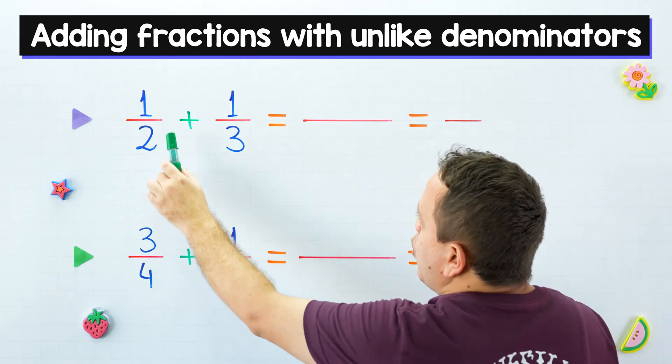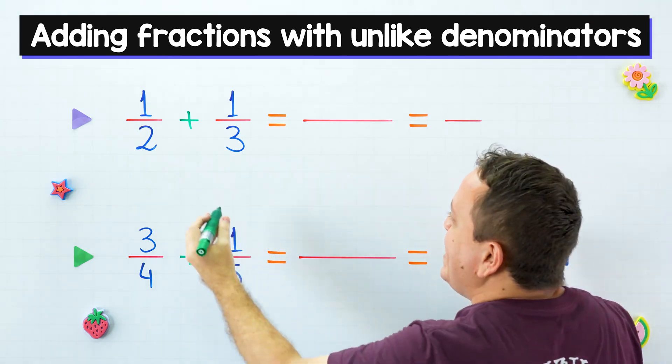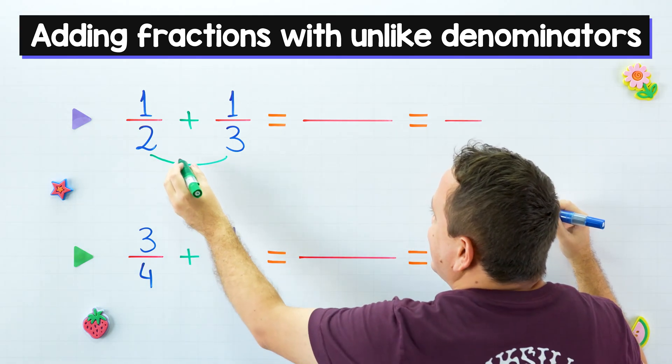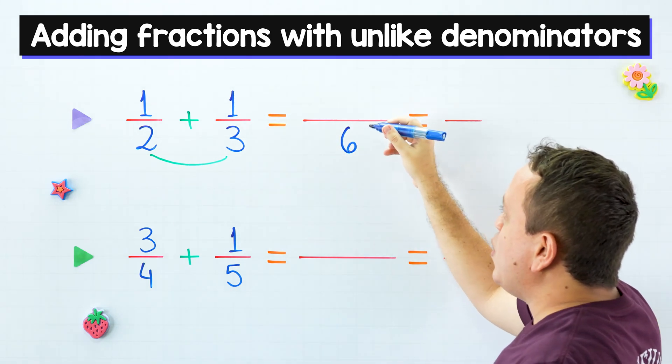In the first example, we have to add one half plus one third. Let's start multiplying the denominators. Yes, two times three equals six.